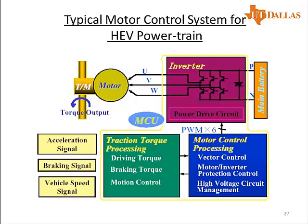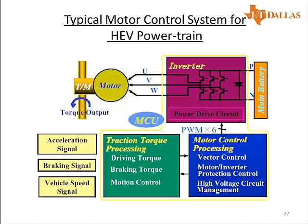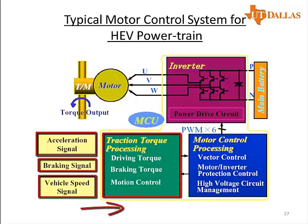In EVs and series hybrid vehicles the complete propulsion is provided by an electric motor. In parallel hybrids propulsion is provided by a combination of internal combustion engine and electric motor. Here the DC power from the battery is supplied to the inverter, which converts DC to variable frequency and variable voltage AC to provide power to the propulsion motor to achieve the required torque or speed. In all EVs and HEVs there is generally a propulsion system controller which generates the acceleration, brake, and speed signals based on driver commands, converting them to corresponding speed and torque commands for the motor.